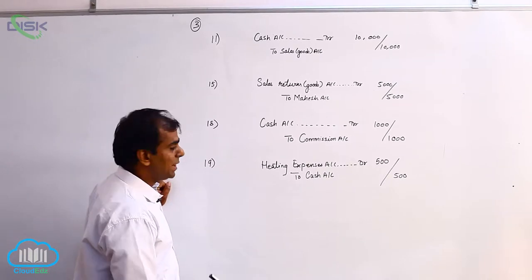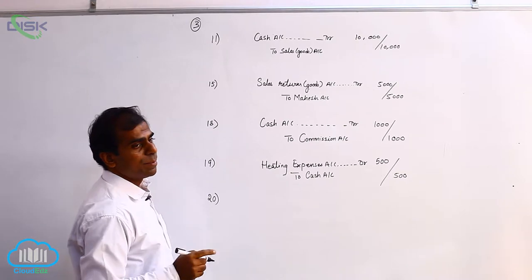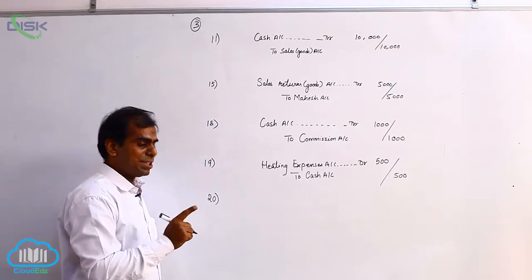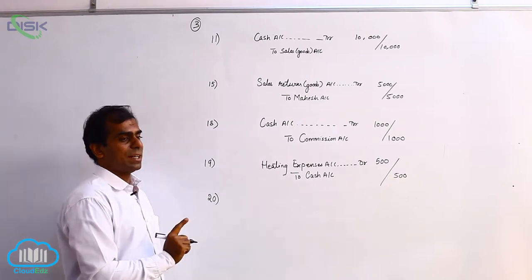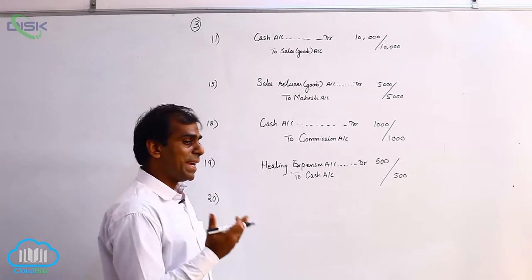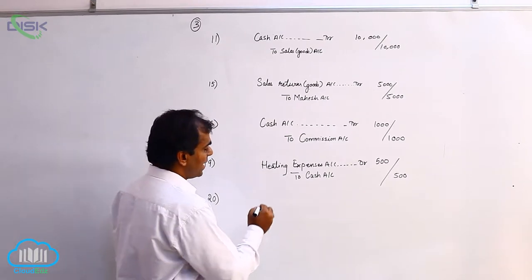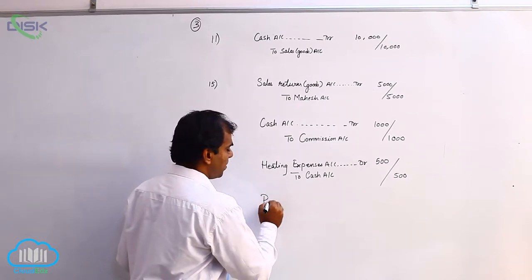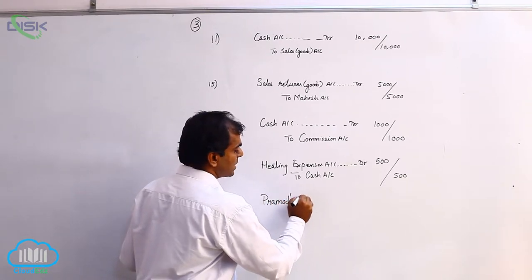Now the transaction is on 20th: cash paid to Pramodh. The two accounts are cash and Pramodh. Pramodh is a personal account, and the business is paying cash to Pramodh, which means Pramodh is the receiver. So we apply the rule of debit the receiver for Pramodh and debit his account. Pramodh's account debit.